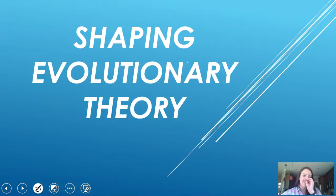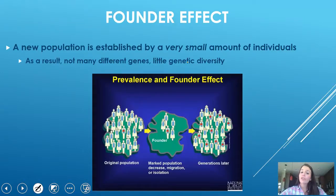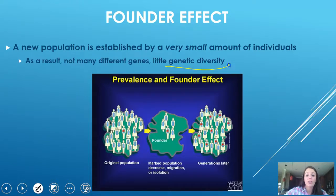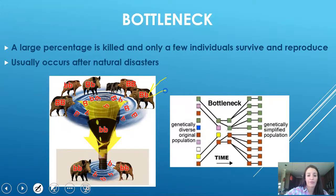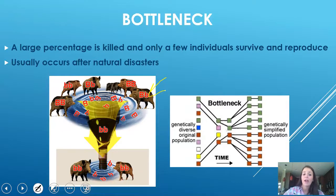Some other things shape evolutionary theory. The founder effect is when a new population is established by a very small number of individuals — as a result, there is very little genetic diversity. The bottleneck effect is where a large percentage of a population is killed, for example by a flood or tornado, only a few individuals survive and repopulate, but that variety of genes isn't really there anymore.